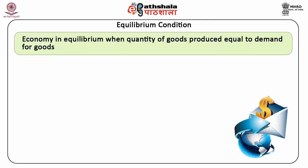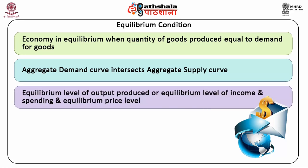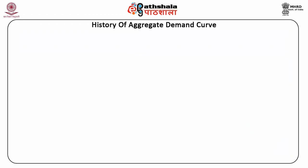An economy is in equilibrium when the quantity of goods produced in the economy is equal to the demand for these goods. In other words, when the aggregate demand curve intersects the aggregate supply curve, we get the equilibrium level of output produced, or the equilibrium level of income and spending, and the equilibrium price level. Let us now know about the history of the aggregate demand curve.